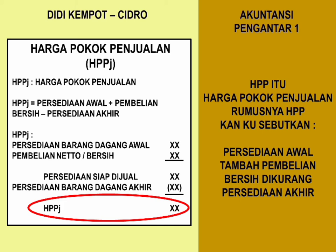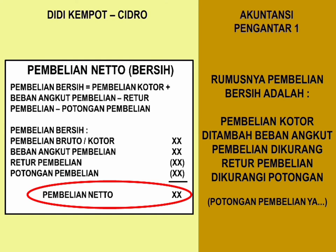HPP itu harga pokok penjualan. Rumusnya HPP: persediaan awal tambah pembelian bersih dikurang persediaan akhir. Rumus pembelian bersih adalah pembelian kotor ditambah beban angkut pembelian, dikurangi retur pembelian, dikurangi potongan pembelian.